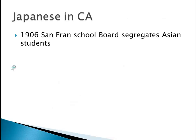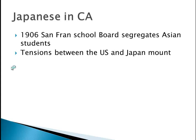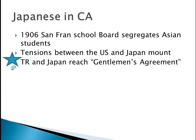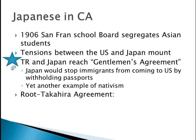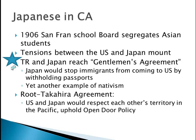In 1906, the San Francisco School Board segregated Asian students, giving them a separate school. Japan was furious about this. San Francisco got rid of the segregation with the urging of Teddy Roosevelt, and he and Japan reached what is known as the Gentleman's Agreement — very, very important to know. Japan would stop immigrants from coming to the U.S. by withholding passports, simply cutting off immigration to the United States. This is yet another example of nativism. The U.S. and Japan would respect each other's territory in the Pacific and uphold the Open Door Policy.